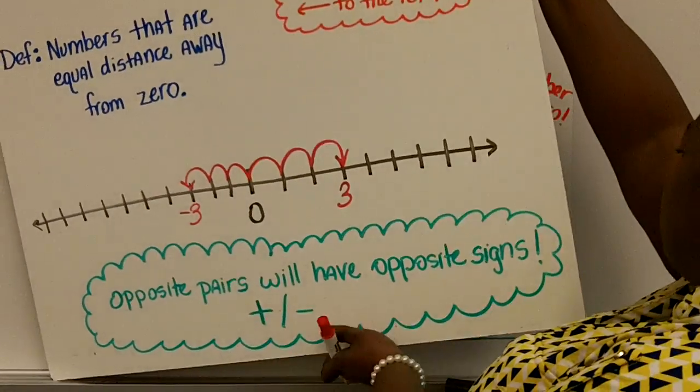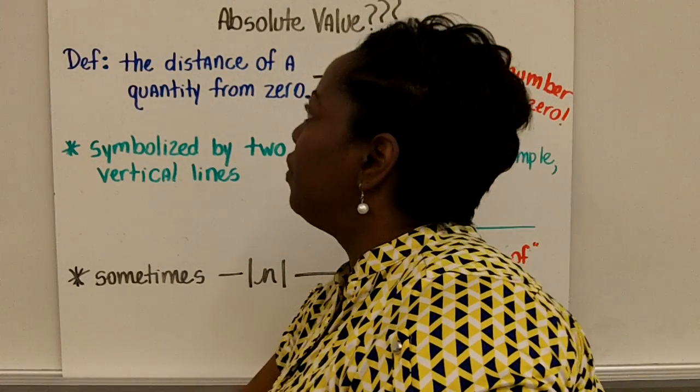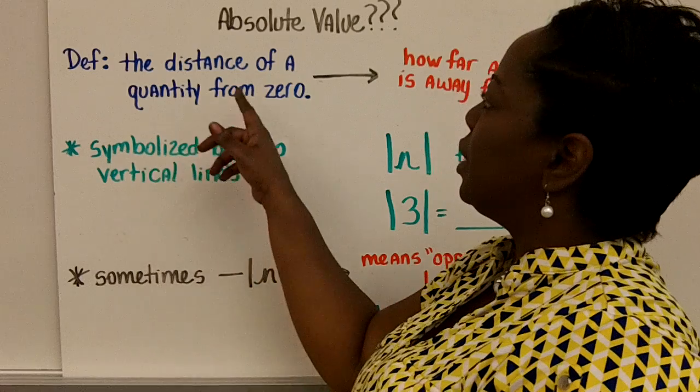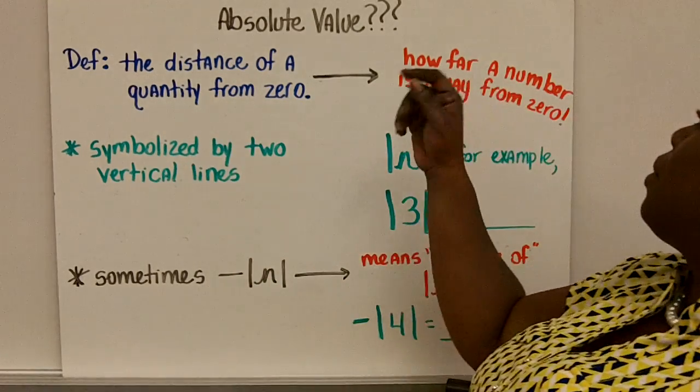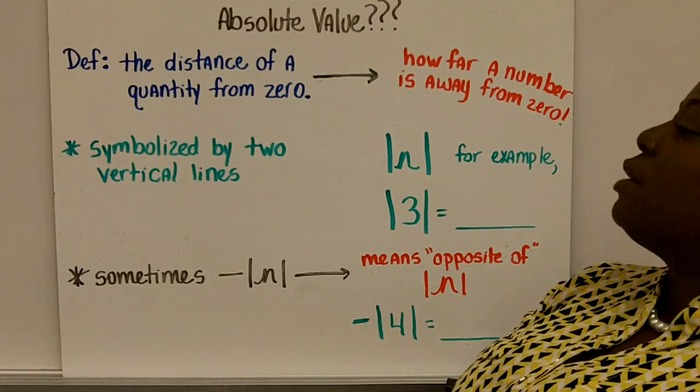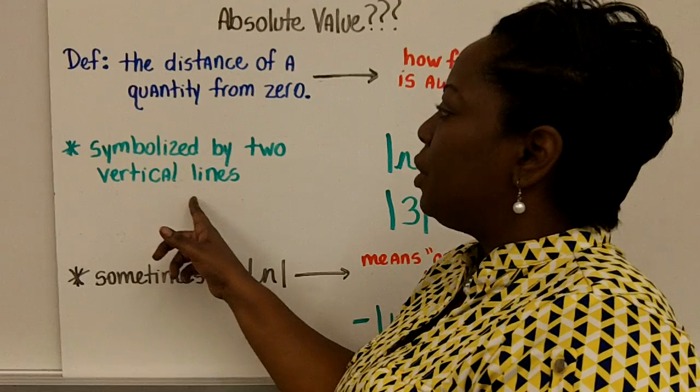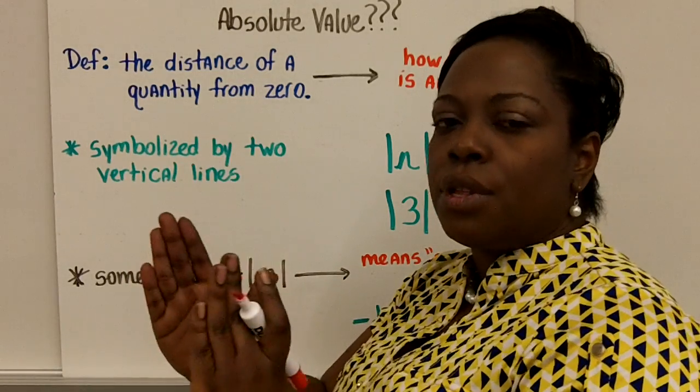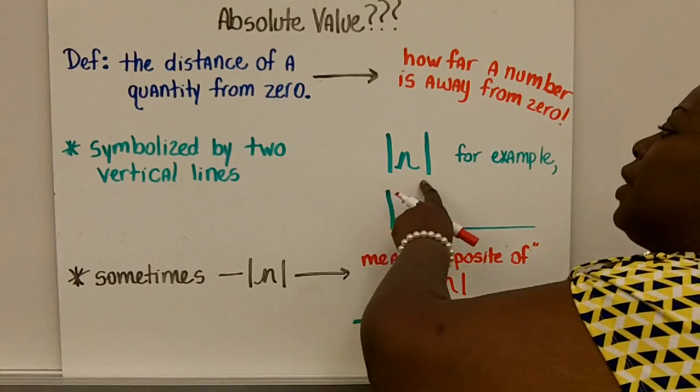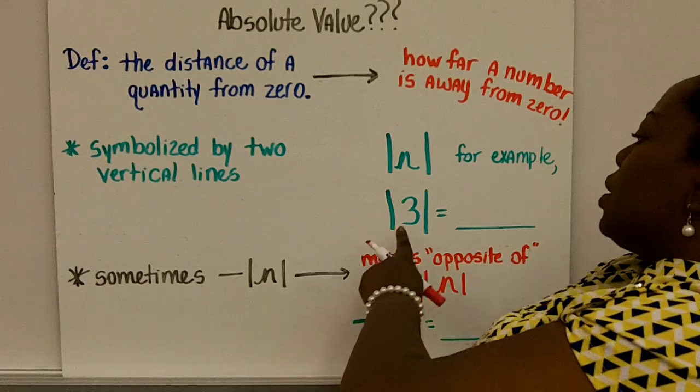Last thing I want to talk to you about: absolute value. The proper definition: absolute value is the distance of a quantity from zero. So in other words, it's how far a number is away from zero on a number line. Absolute value will be symbolized by having two straight lines around the number. So it'll look something like this where n could represent any number.